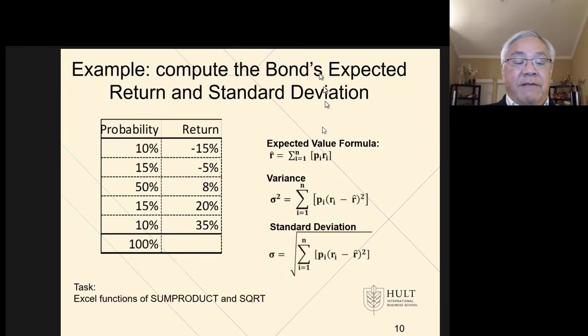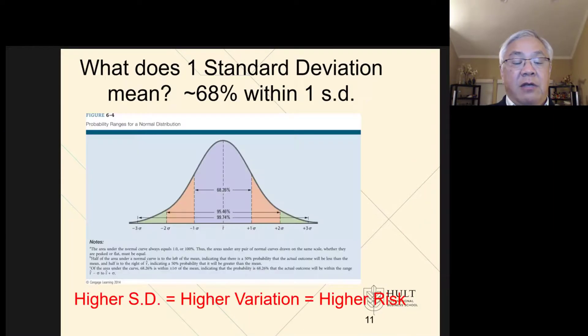That is the standard deviation expected return. When we look at a normal distribution, this chart is pretty handy. This is the expected value right in the middle. One standard deviation accounts for 68% of the expected outcomes.